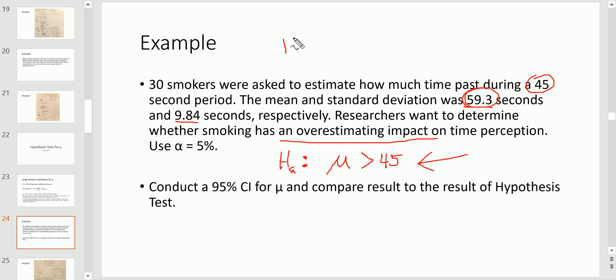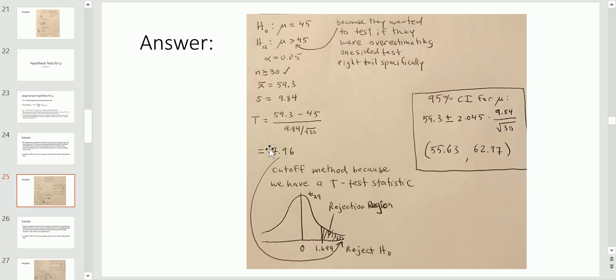So you formulate the null and the alternative. The alternative is the trickier part. The null is that it equals 45, remember because we're sticking with the simple statement in the null. But of course this implies since we're testing overestimating, this can also be written as such. In our text this would be the preferred statement: a simple statement. We're going to conduct it at an alpha of five percent and then as a part b we're going to also construct a confidence interval.